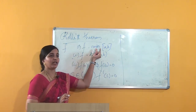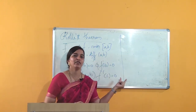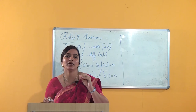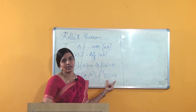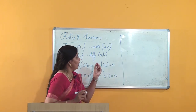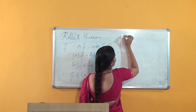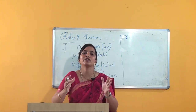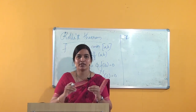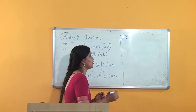So here, given that F(a) = 0 and F(b) = 0, they are saying you can find a point C such that F'(C) = 0. Now two cases arise. In between a and b, I can find some points x. All function values at those points x may not be 0 — some may be 0, some may not be 0, or all function values may be 0.